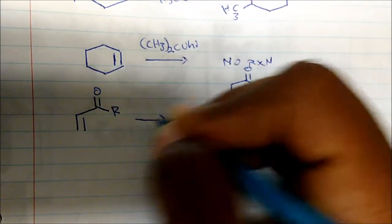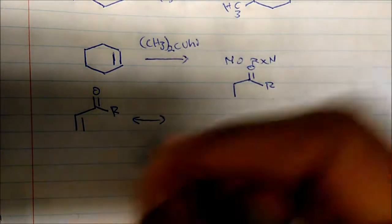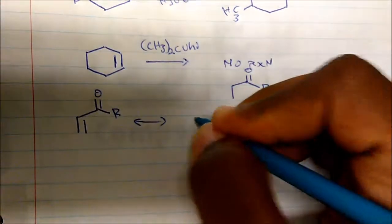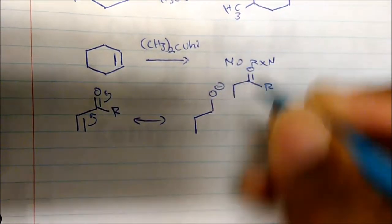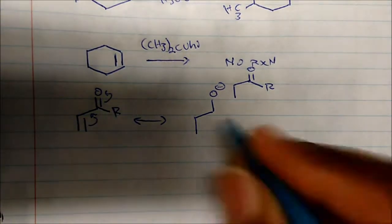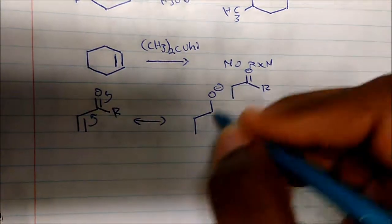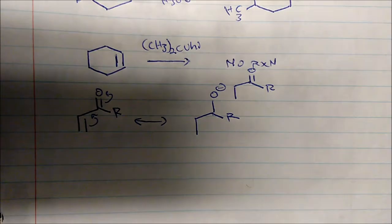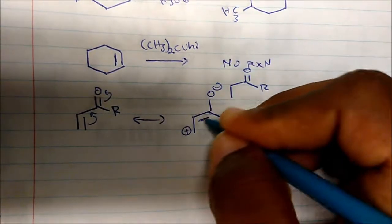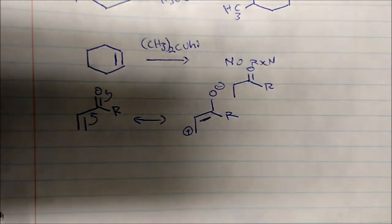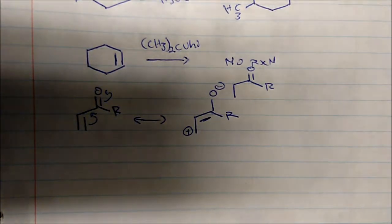This is in resonance with what? I could move these electrons here and I form the enolate type of resonance. We have our R group here and we create a positive charge on that carbon, and we have a double bond right there.